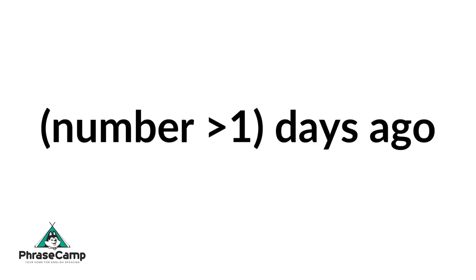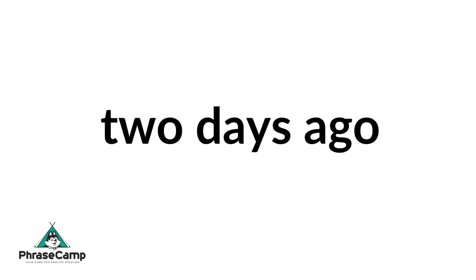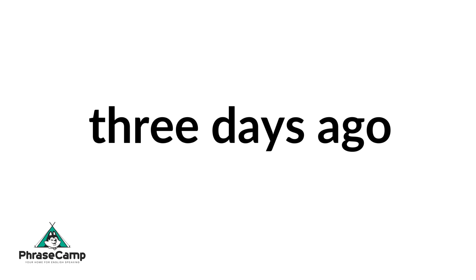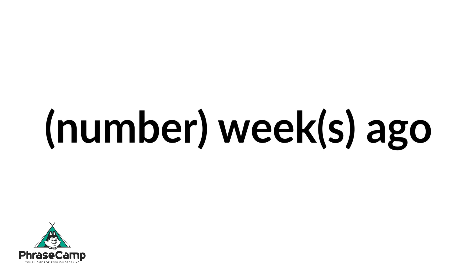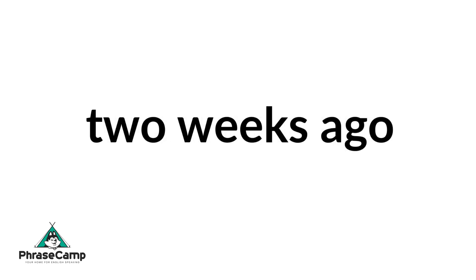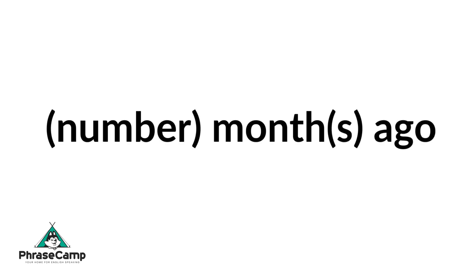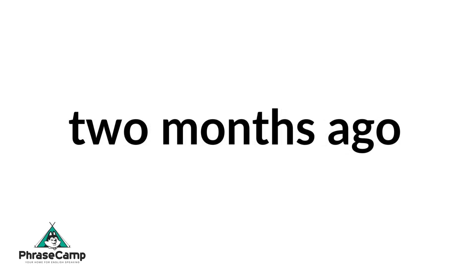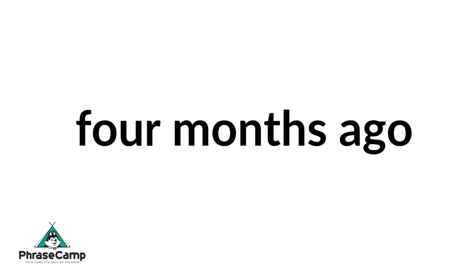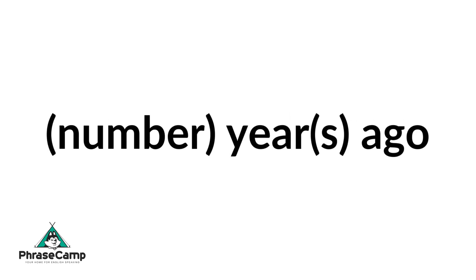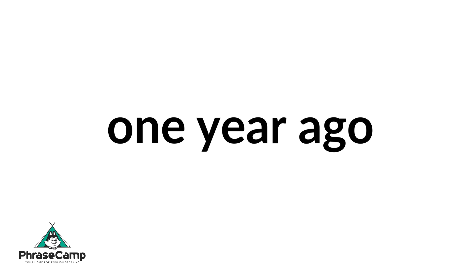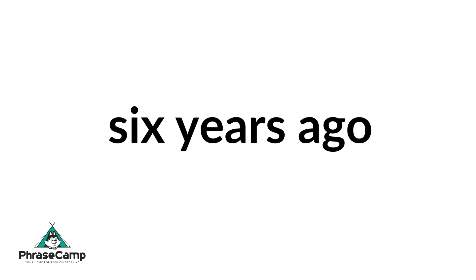Next, add a number and then add days ago — two days ago, three days ago, or five days ago, etc. Add number and week or weeks ago: one week ago, two weeks ago, three weeks ago, four weeks ago. Then add number and month or months ago: one month ago, two months ago, three months ago, four months ago. Next, add number and year or years ago: one year ago, two years ago, three years ago, six years ago, and so on.